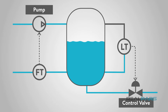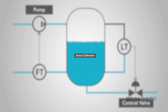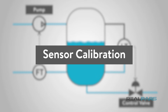So, how does a plant maintain the operation of these sensors to guarantee that the actual value of the process is sensed and passed to the control system? In this video, we will learn that the answer to that question is Sensor Calibration.